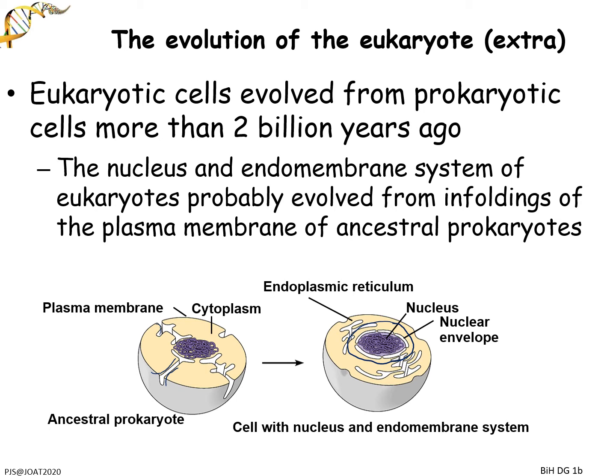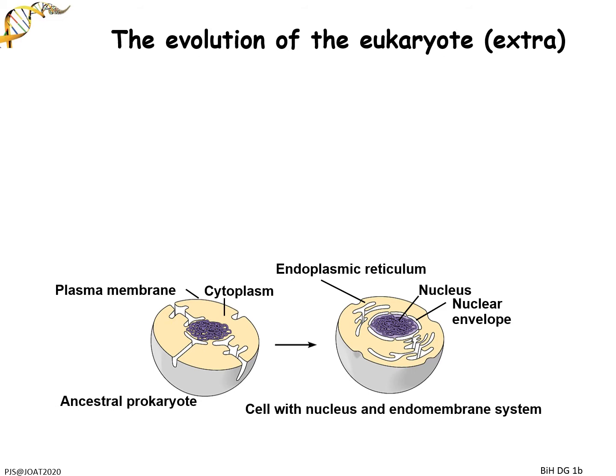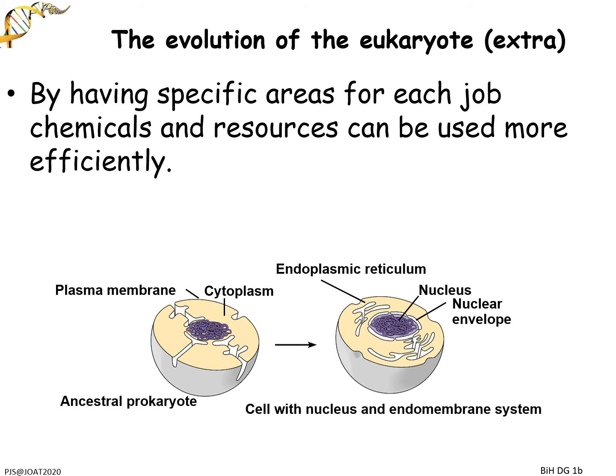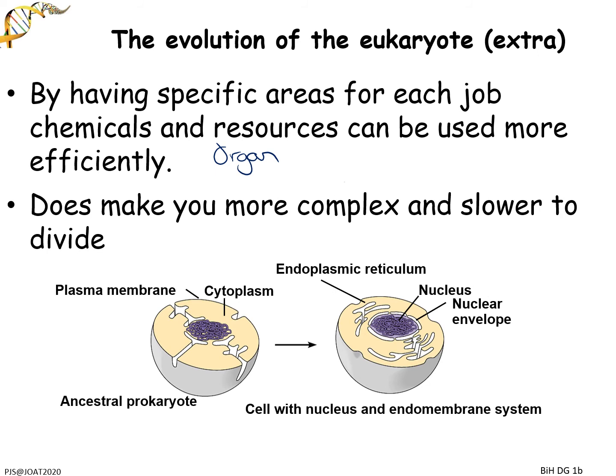Having a particular area with a particular job means you can do things much more efficiently - this is the cell version of what we do with an organ. But there's a trade-off: more complexity makes it harder to divide quickly. A prokaryote like a bacterial cell can do a full cell division in about 20 minutes, whereas one of your cells even going flat out takes about 24 hours. That means in terms of evolutionary speed, prokaryotes have got an absolute advantage.